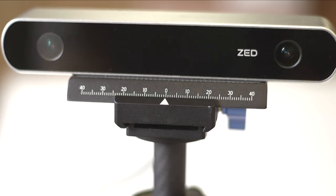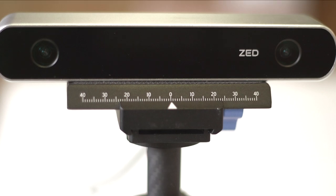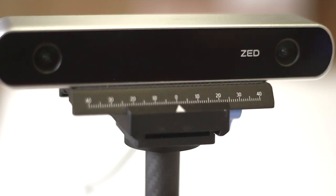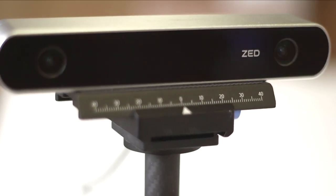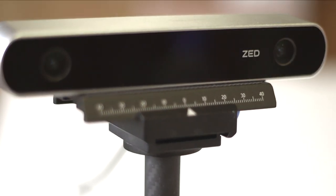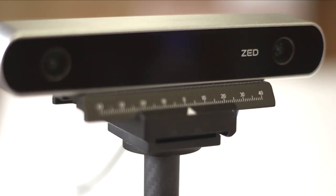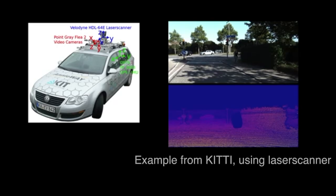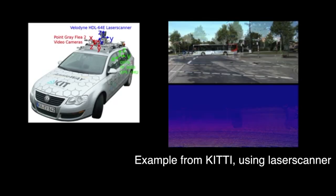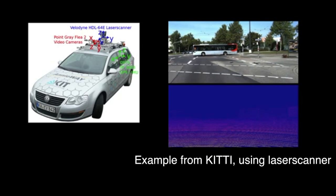To capture depth using video cameras, normally you would have two of them pointing in the same direction, a little bit like our eyes. Another option would be to have a laser scanner, which uses time of travel to estimate a depth for every point where the laser touched.